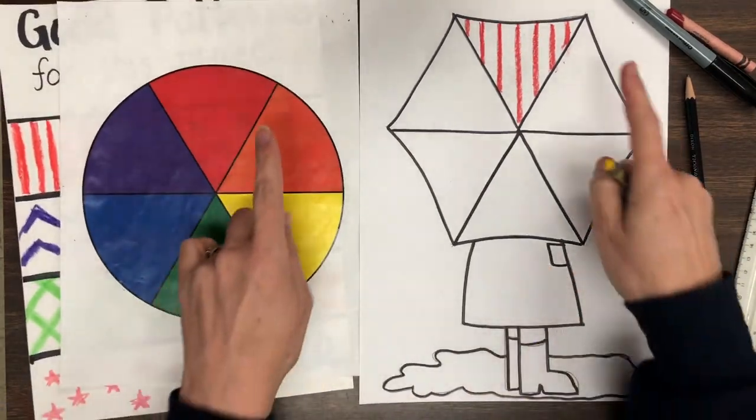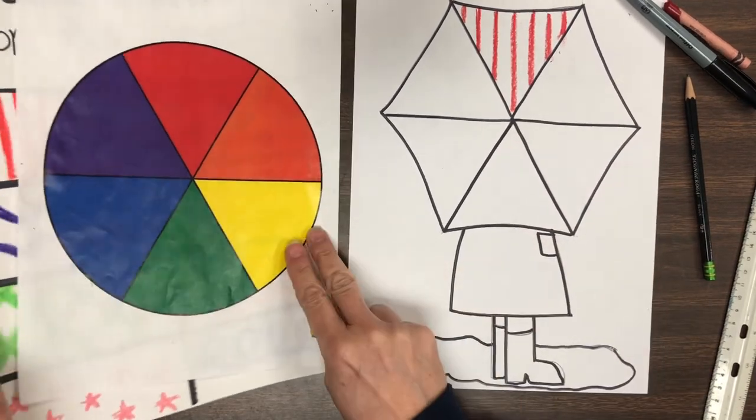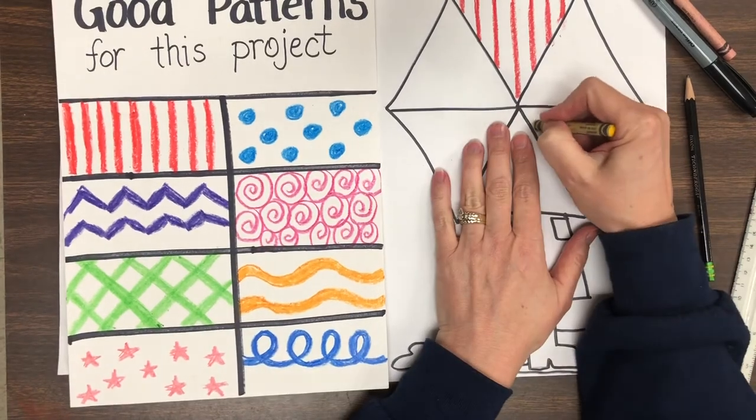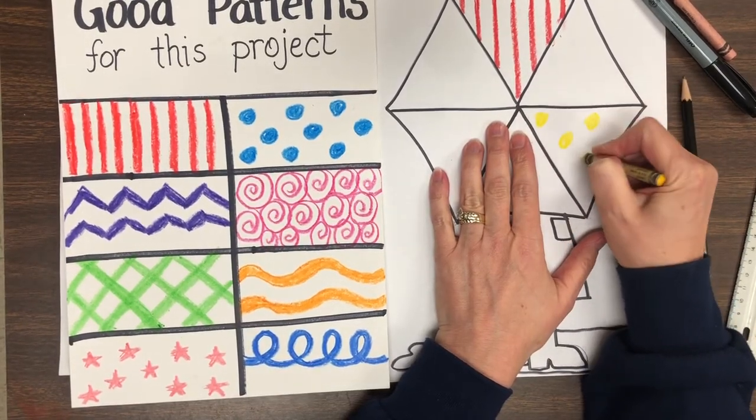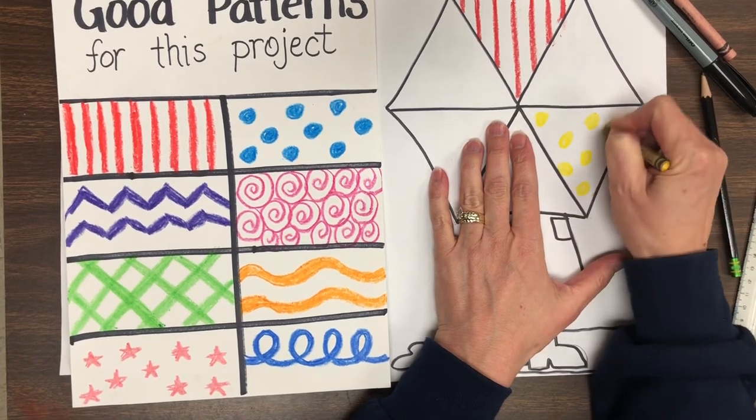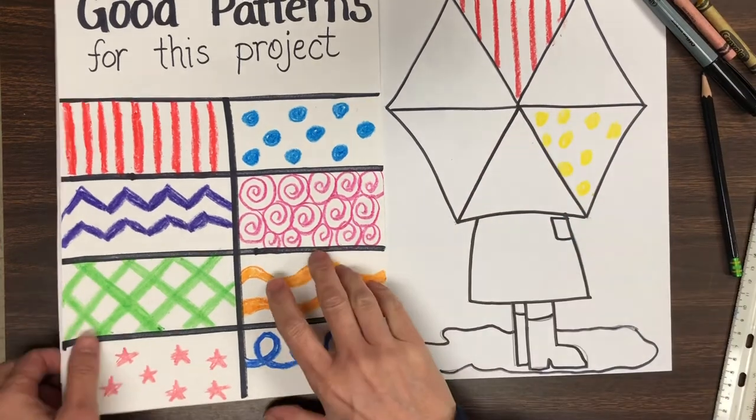I'm going to skip the orange section and move on to the yellow section of the color wheel because that's a primary color. So I'm going to choose the polka dot pattern and use my yellow crayon in that section. So remember, today we're just doing red, yellow, and blue, the primary colors. You can use any of these patterns or you may want to come up with one of your own.